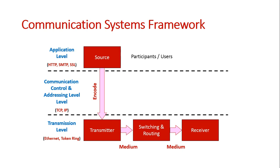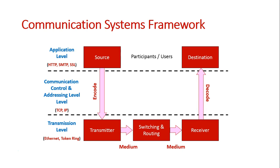The receiver is attached to the computer of the person we want to end up with the data. Once it's gotten to the receiver, the message needs to be decoded back from the packets it was arranged in into its original message form. It then reaches its destination — essentially the system of the person who requested the data or had the data transmitted to them.